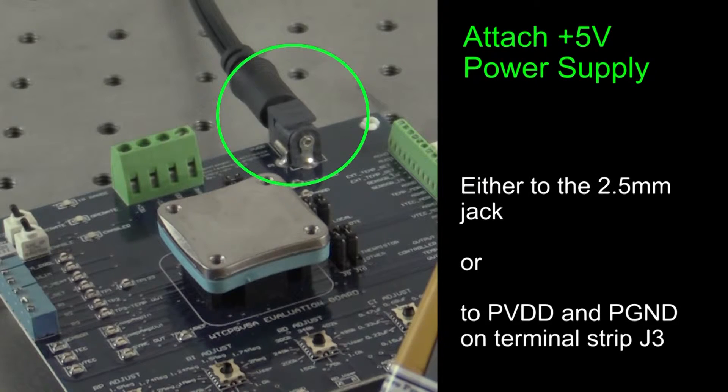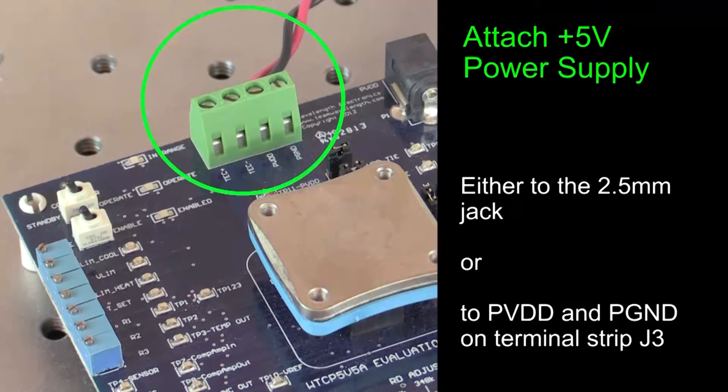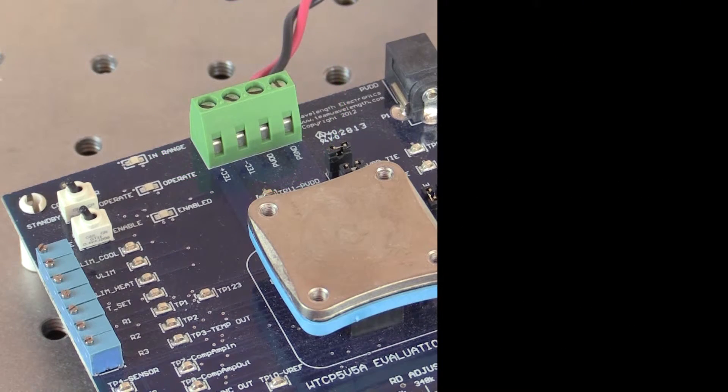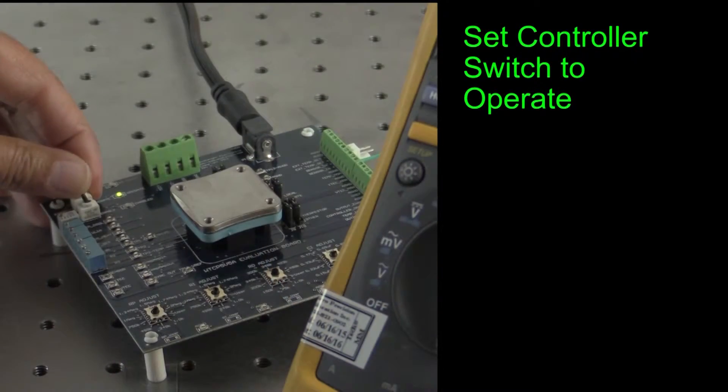Now, attach a plus 5 volt power supply either to the 2.5 millimeter power jack or to the terminal strip PVDD and PGND ports on J3. Set the controller switch to operate.